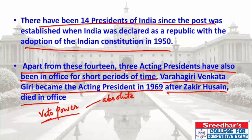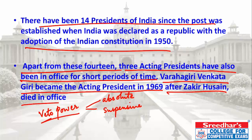Absolute Veto means the President withholds assent to a bill passed by Parliament — the bill does not become an Act. Suspensive Veto means the President returns the bill for reconsideration. Parliament may then make amendments or pass it again. If re-passed, the President is compelled to accept it. In the case of Suspensive Veto, the bill is re-passed by ordinary majority, after which the President must accept it.